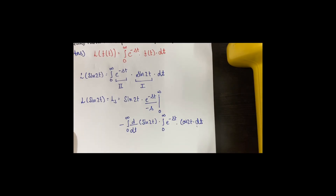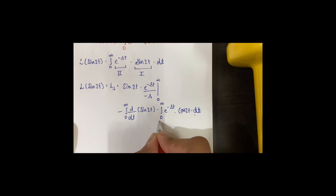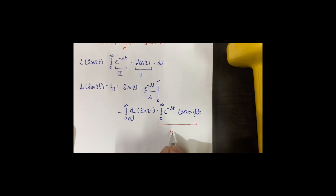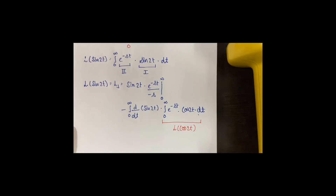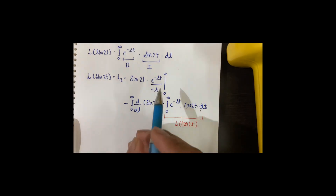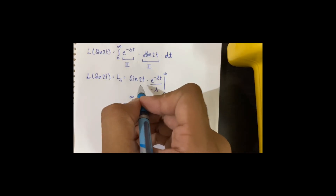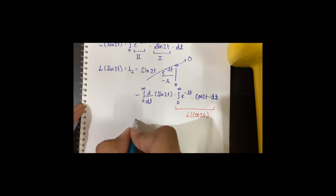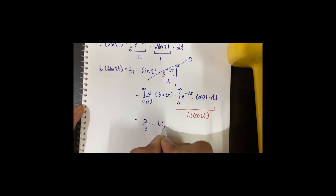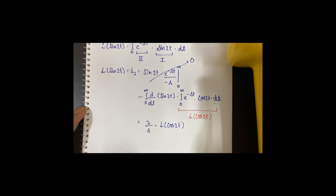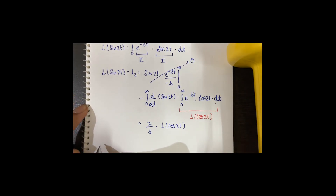As we can clearly see, this expression is the Laplace of cos 2t. So in order to find the Laplace of sin 2t, we first need to find the Laplace of cos 2t. Since the limits are from 0 to infinity, the boundary term cancels out and becomes 0. The remaining term simplifies to 2 over s times the Laplace of cos 2t, which we will call LC.